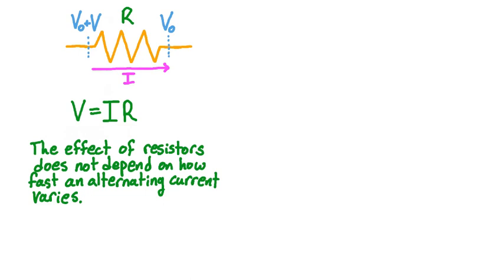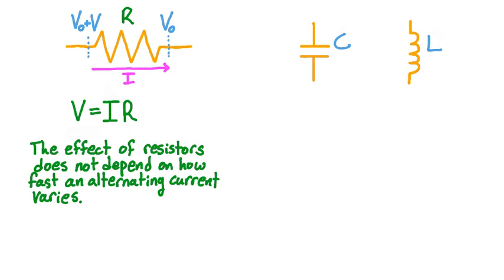What's special about resistors is that a resistor's effect in a circuit doesn't depend on the frequency of the alternating current. On the other hand, the effect of capacitors and inductors on a circuit does depend on the frequency of the alternating current. Furthermore, the current through a resistor is in phase with the voltage across it, but the current through capacitors and inductors is out of phase with the voltage across them. We therefore need to define a new kind of quantity called the reactance, which is similar to resistance but takes into account phase and frequency.